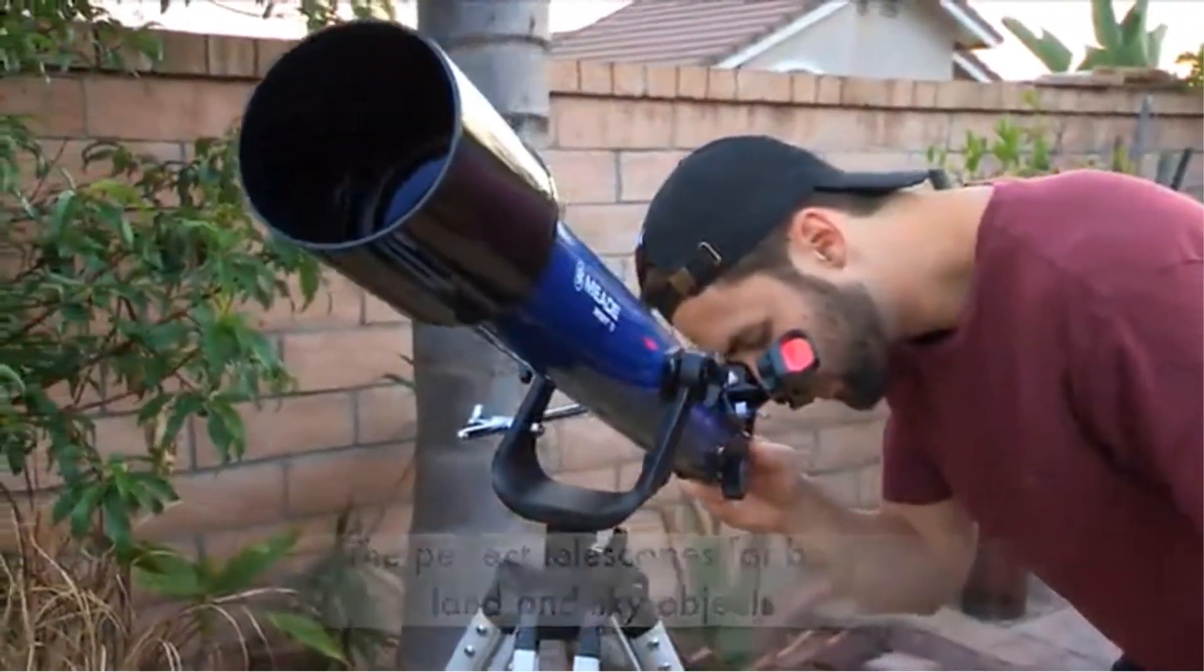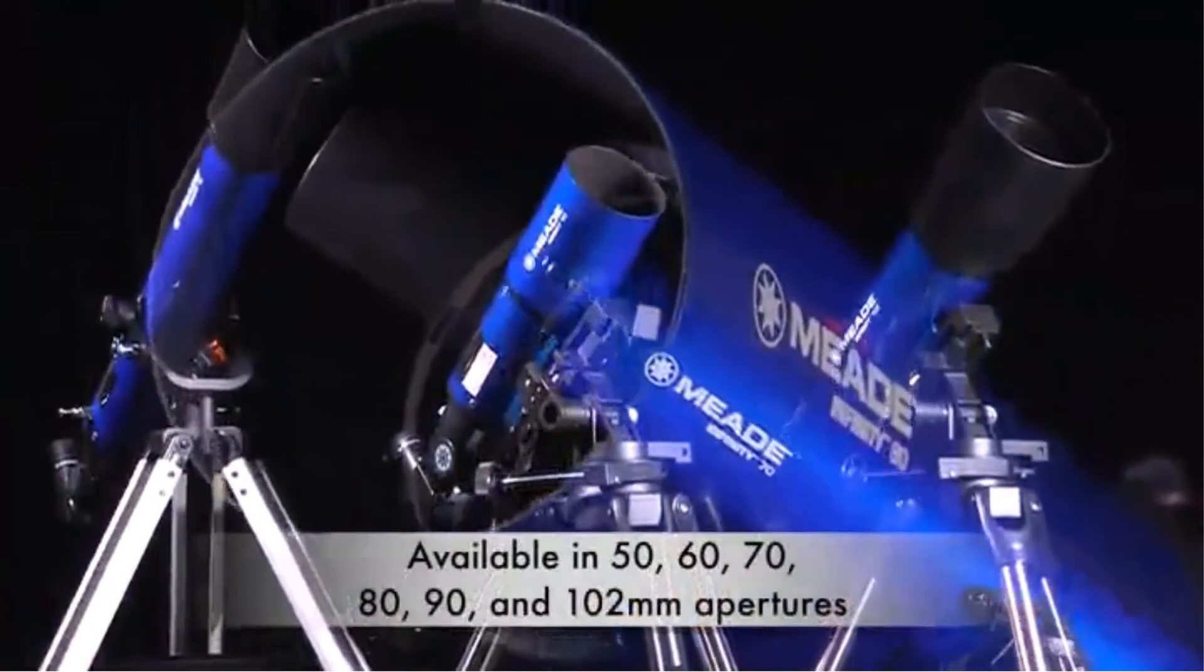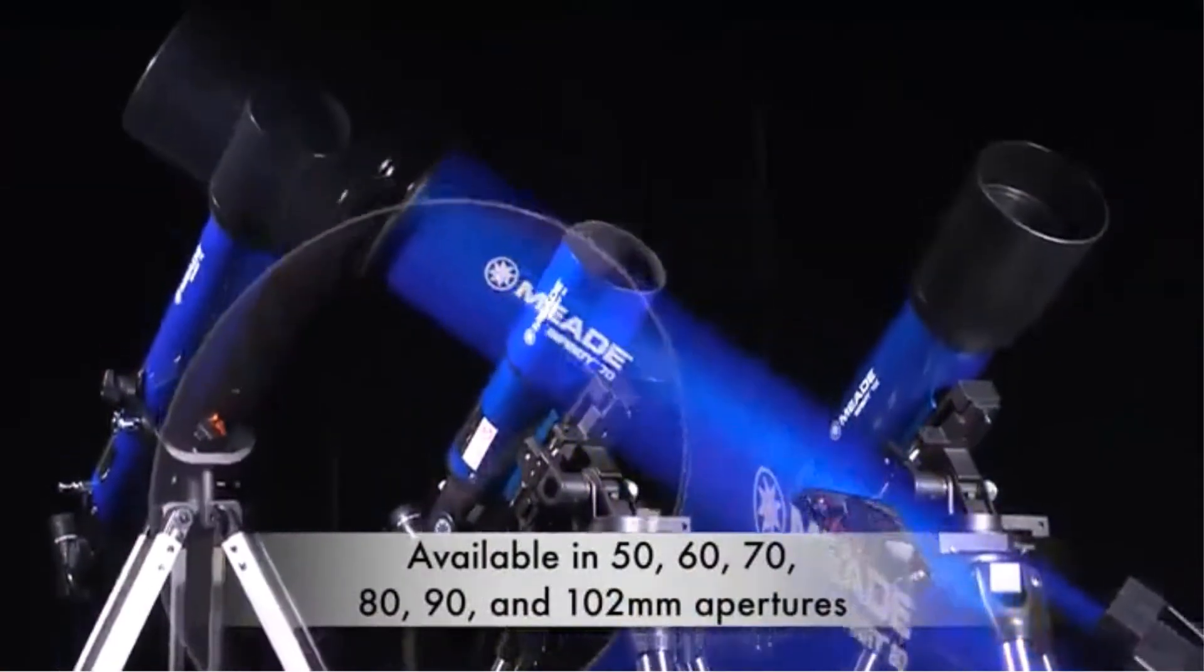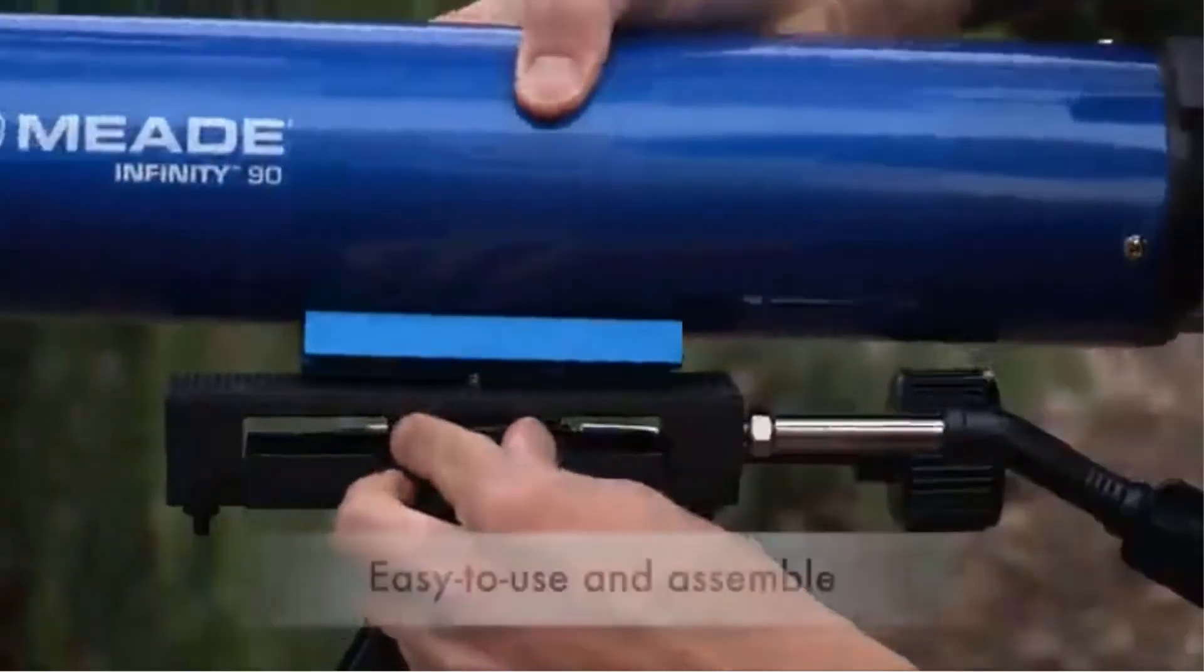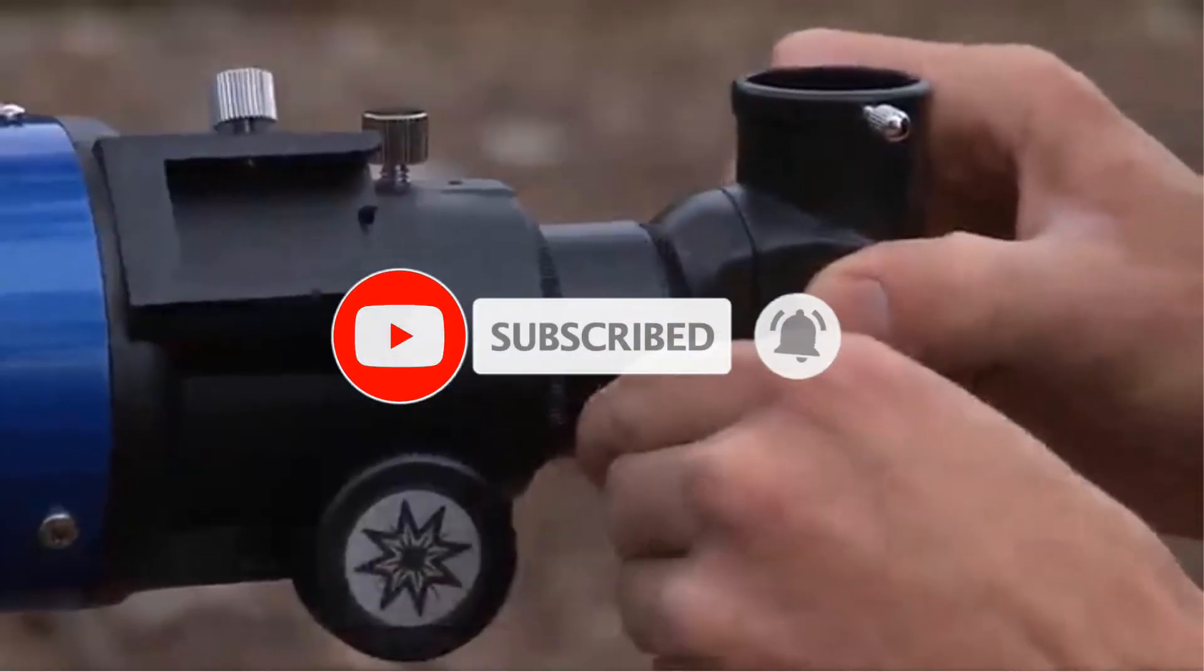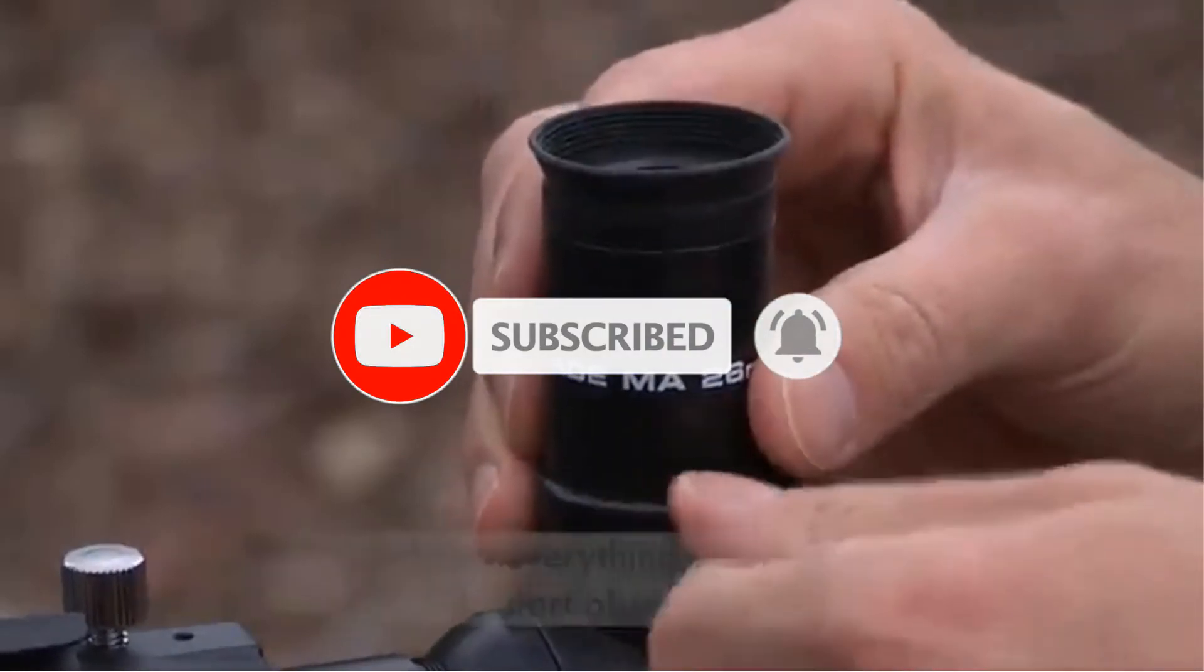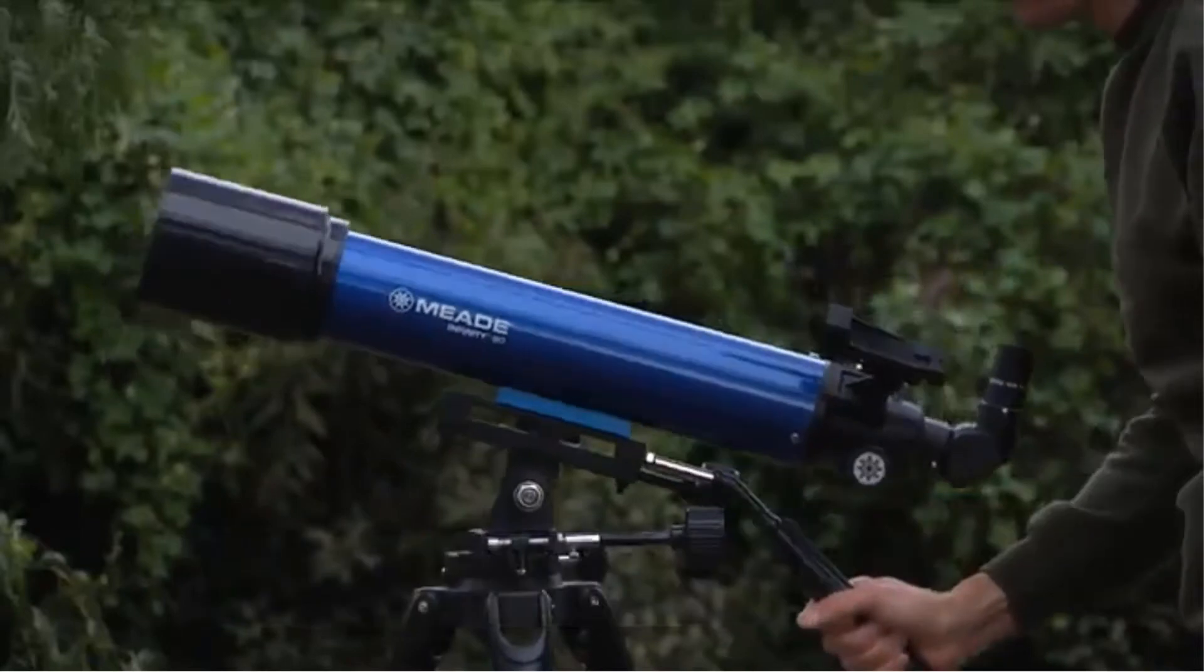The Meade Instruments is easy to adjust and even features a red dot sightline that will make locking into your targeted area much simpler. The user-friendly features extend all the way down to the supplemental features included in the package. In addition to getting the telescope, you'll also receive an instructional DVD that orients you to how telescopes work and what you should be looking for.